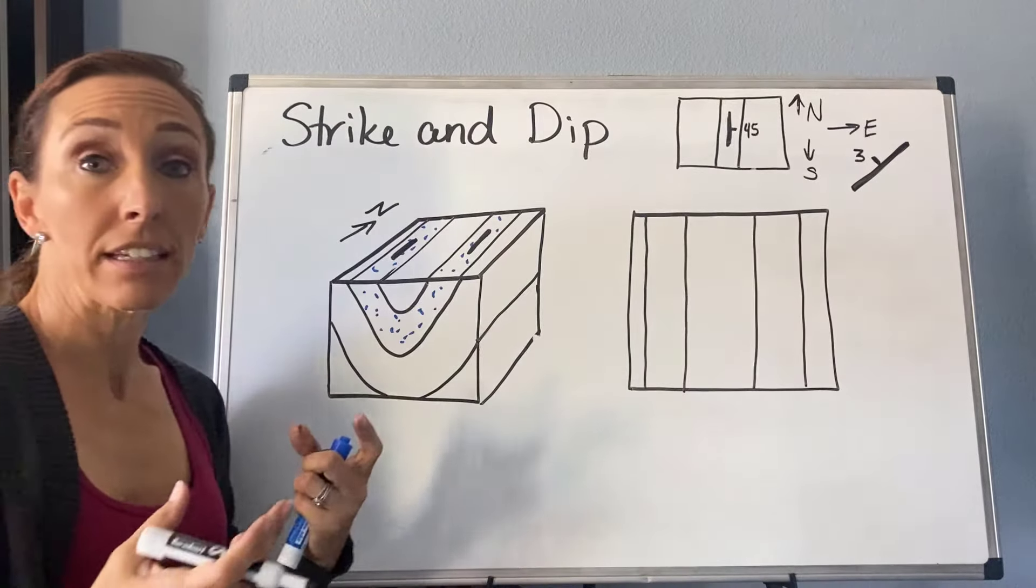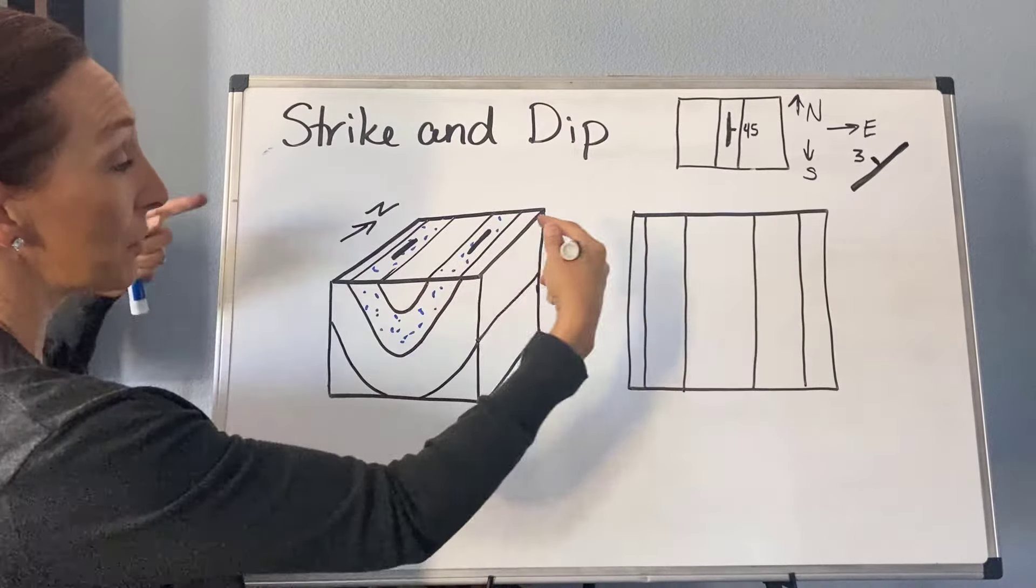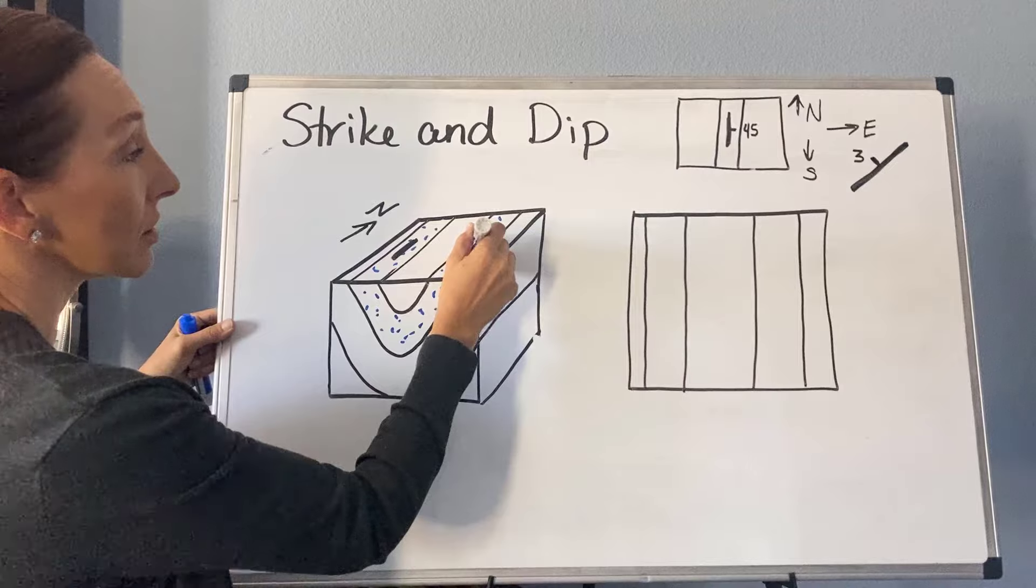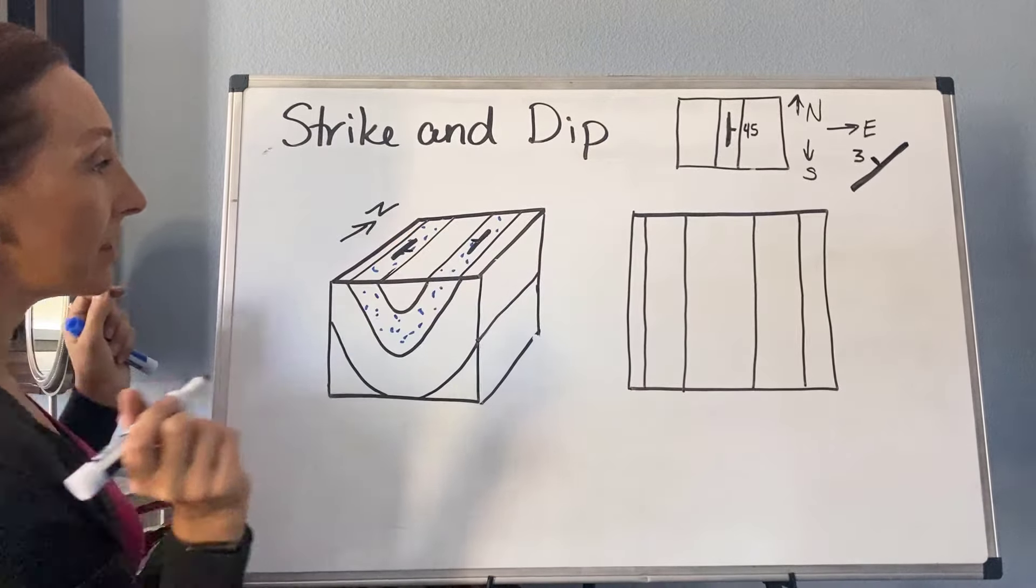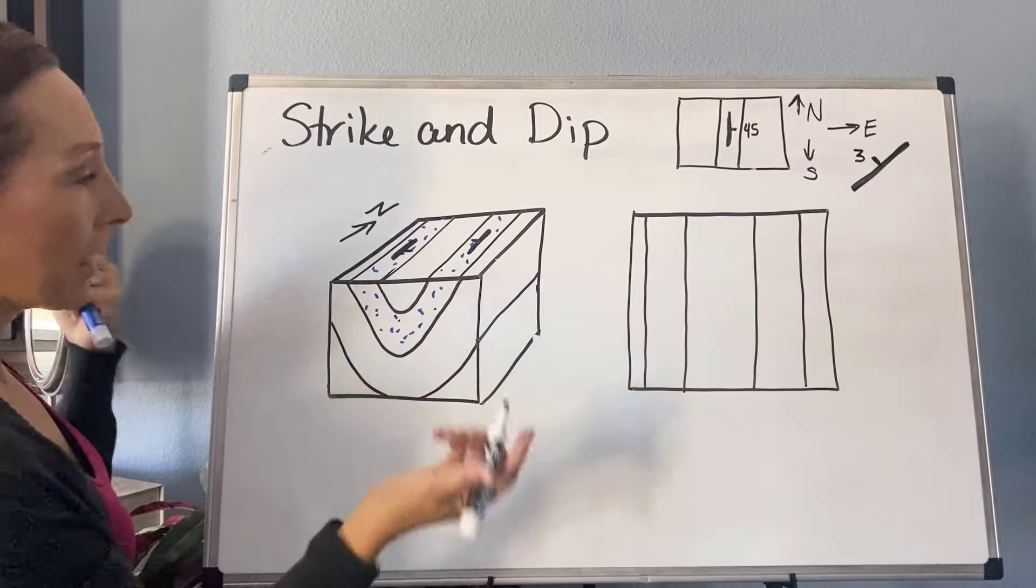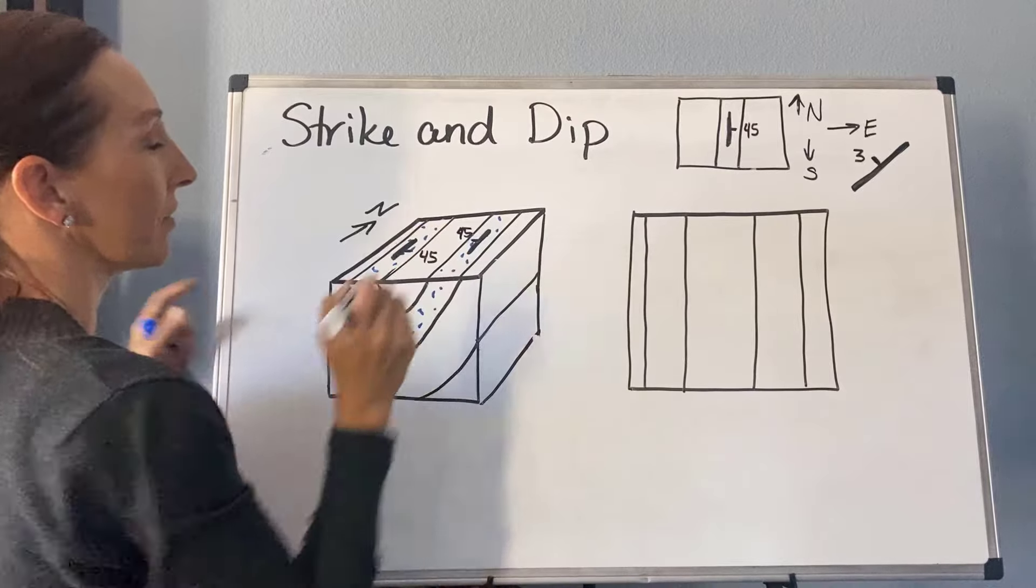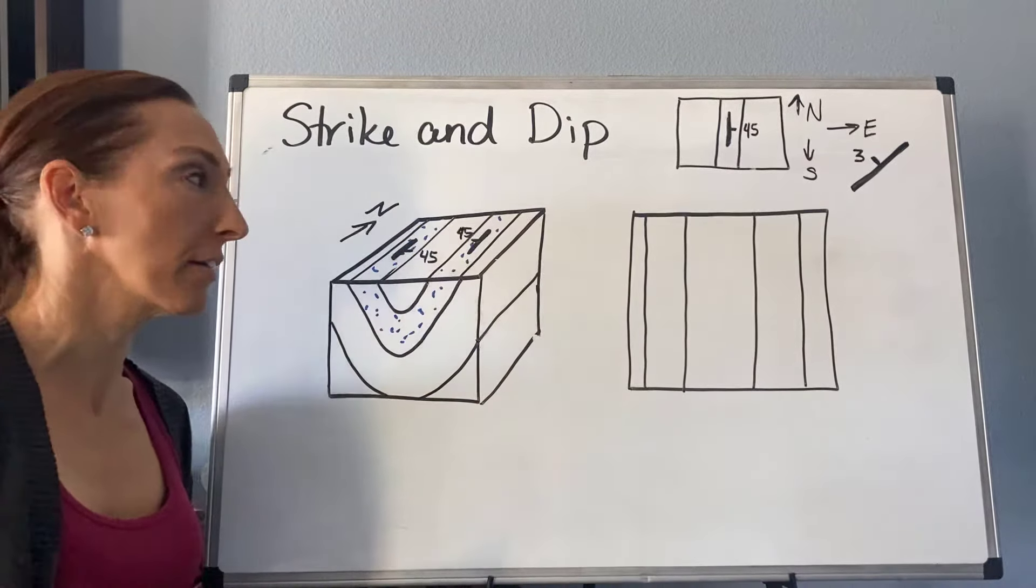And if we look at the dip, we can see from our cross section that it's dipping toward the center of that fold. So I would draw a little tick mark there to the center, and a little tick mark there to the center. And let's say that that's 45 degrees, so I would put a little 45 here and a 45 there. And that would be my strike and dip on the top of this block diagram.